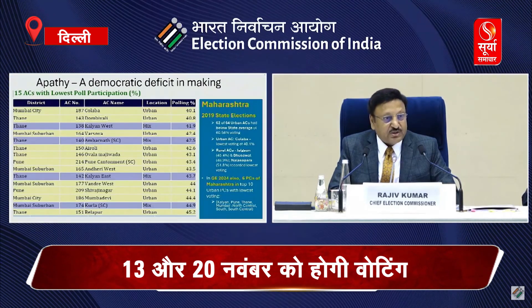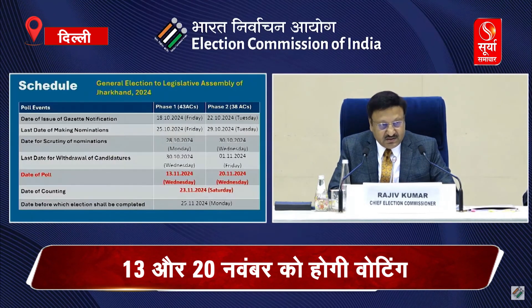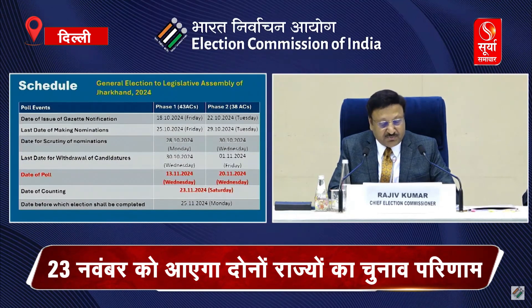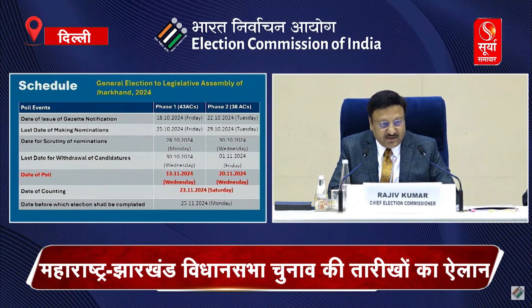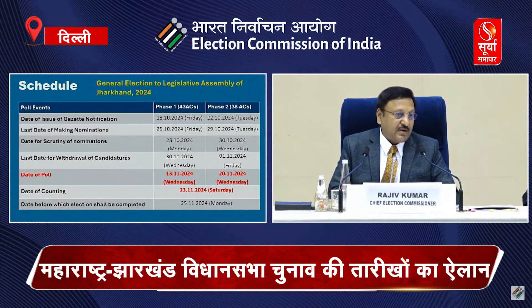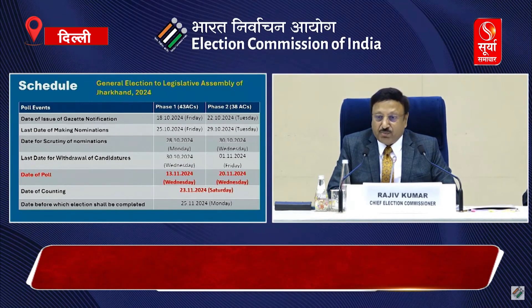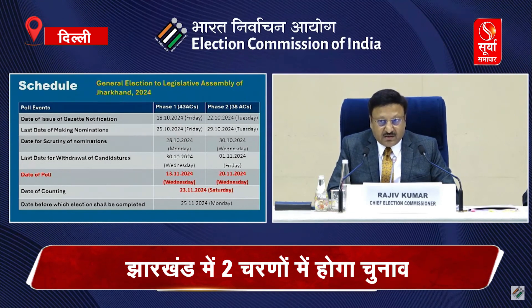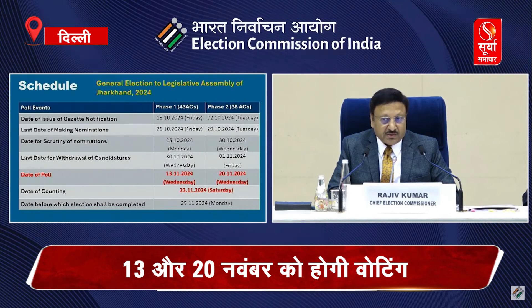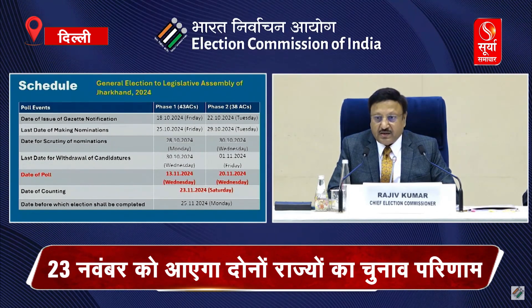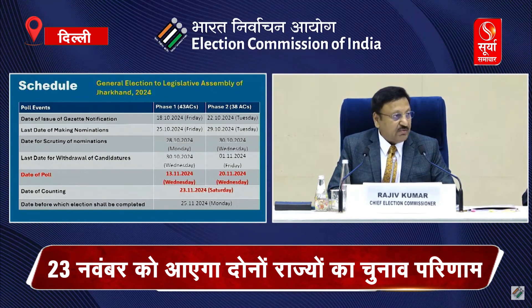Now, friends, coming to Jharkhand. Jharkhand is a very strong state, and we will appeal to all voters that all voters will vote. Schedule would be like this: Jharkhand would be in two phases. The date of poll for first phase would be on 13th November. And the second phase would be along with Maharashtra on 20th November.